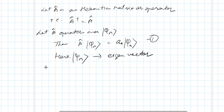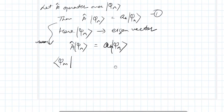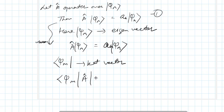Now consider equation one again. If I operate this equation with phi_m — a bra vector acting on the ket vector phi_n — then this equation becomes: phi_m A phi_n equals a_n times phi_m phi_n.